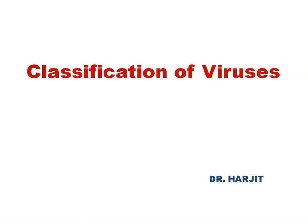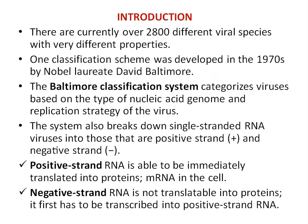Classification of viruses. Currently over 2800 different viral species are present with different properties. In the 1970s, Nobel laureate David Baltimore developed a classification scheme for viruses called the Baltimore classification system. In this system, Baltimore categorizes viruses based on the type of nucleic acid genome present and the replication strategy of the virus.